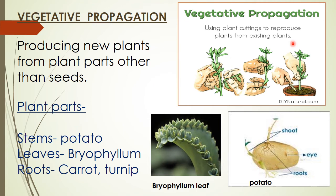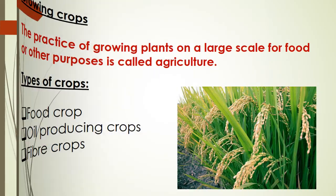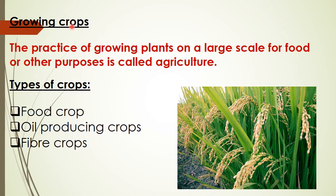We depend a lot on plants, so we should grow more of them. The practice of growing plants on a large scale for food or other purposes is called agriculture. Any plant grown in large quantities to get food and other useful things is called a crop.